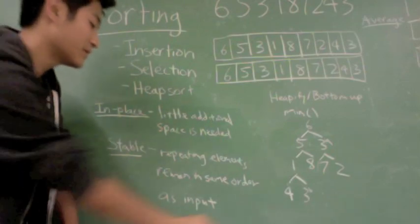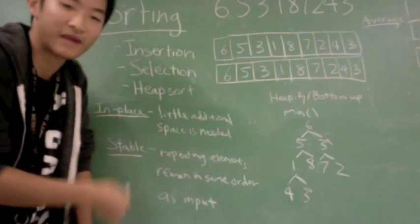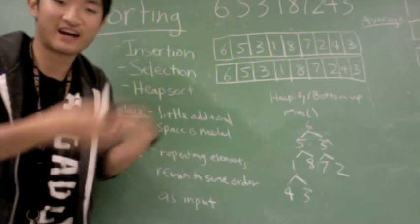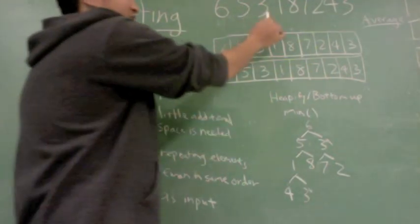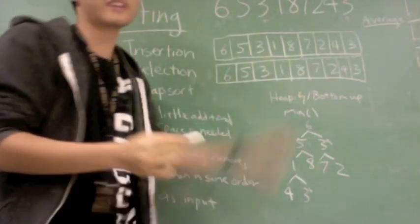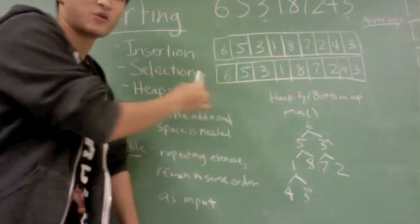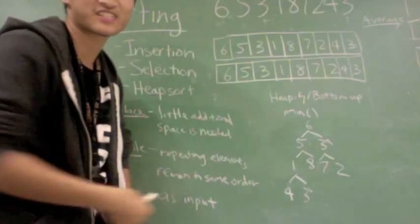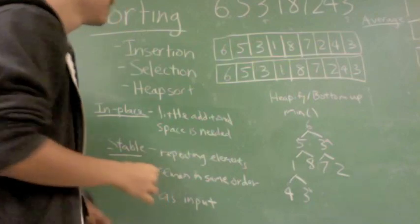And stability, is the algorithm stable? That means, do the repeating elements remain in the same order as they're inputted when I go through the sorting algorithm? You can see here that there's a three here and another three here, so I denoted it A and B. For some algorithms, the order will be swapped, and then we cannot guarantee that it's stable, which might be undesirable for some applications.